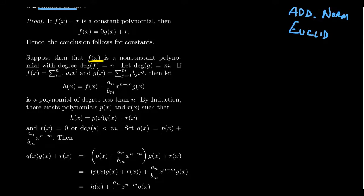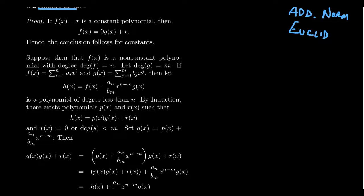Suppose then that F(X) is a non-constant polynomial, so its degree is something positive. Suppose the degree of G equals M. We can write F(X) as the linear combination of terms A_i times X^i up to degree N, and G(X) as the sum of B_j times X^j up to degree M. We could assume F is monic because we could divide by its leading coefficient — that's the nice thing about a polynomial ring whose coefficients come from a field. Nonetheless, consider the polynomial H(X) = F(X) − (A_N / B_M) · X^(N−M) · G(X).